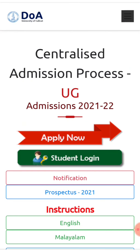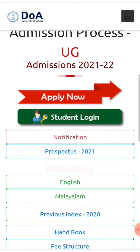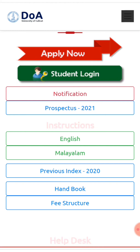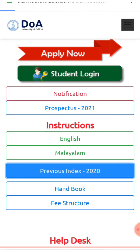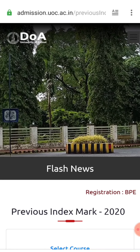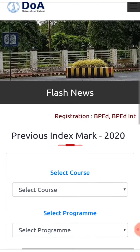Now click 'Apply Now' and proceed to student login. Check the notification. It will show the previous index — 2020 is the previous index. We will select that.